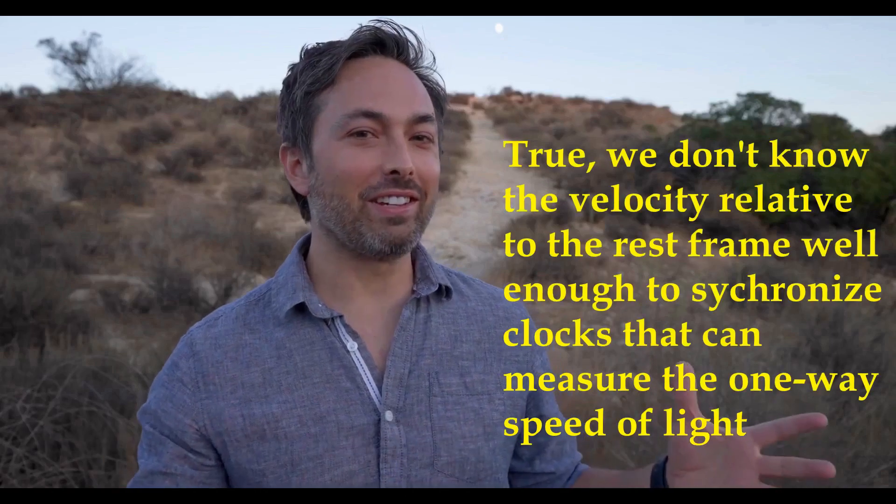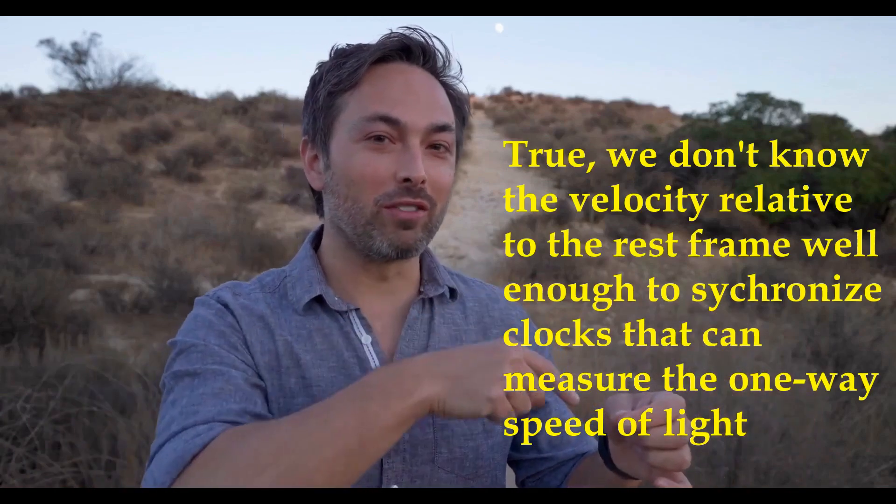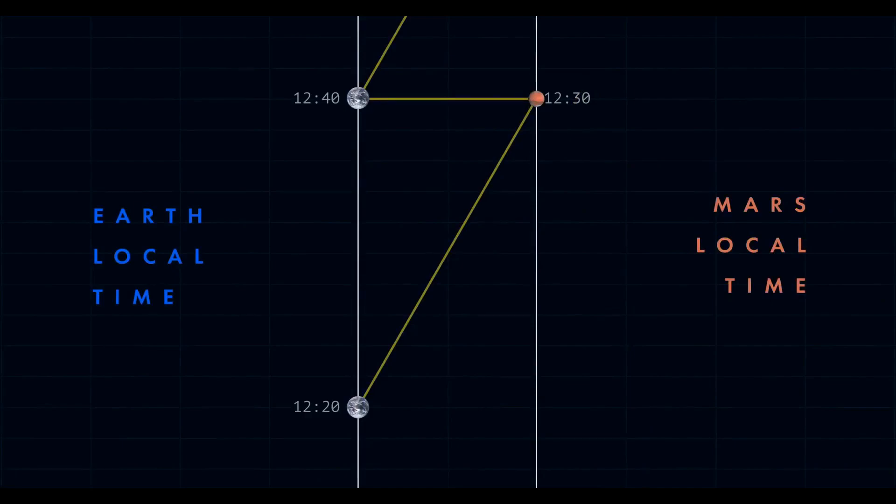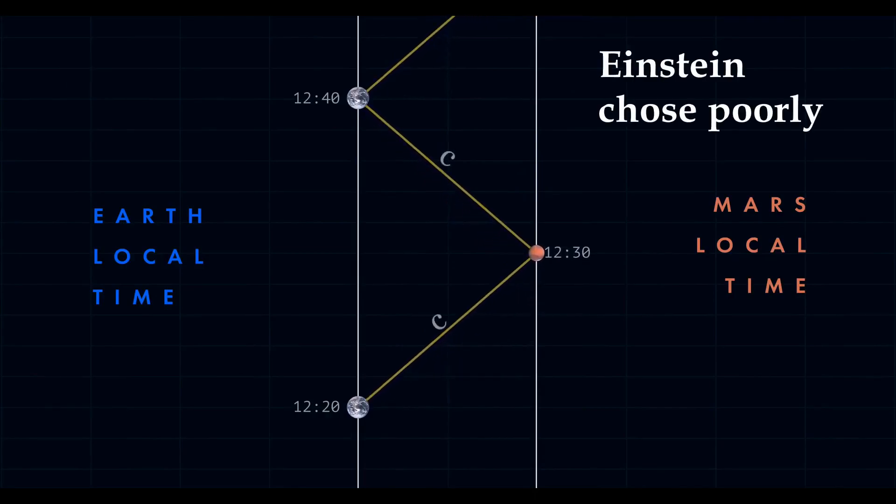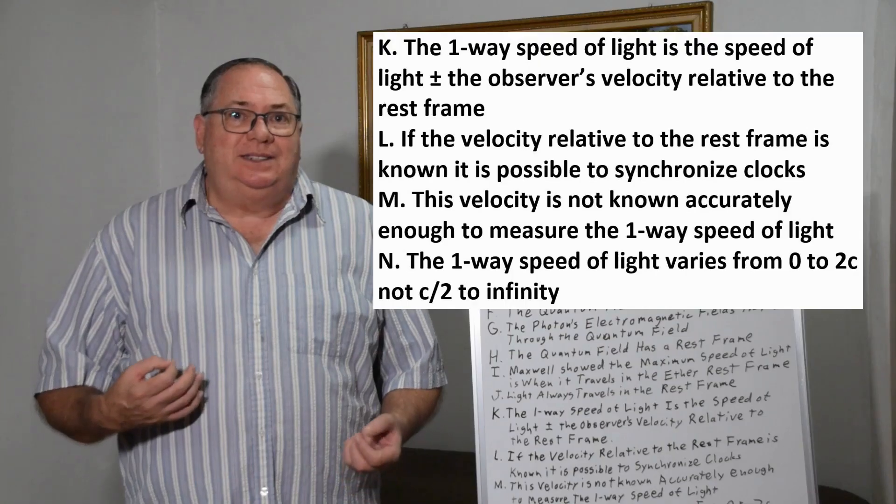The reality is, we're stuck. We need synchronized clocks to measure the one-way speed of light, but we need to know the one-way speed of light in order to synchronize our clocks. Einstein chose the convention where the one-way speed of light is always the same, but from an experimental perspective, any other convention is just as valid, up to and including one where the speed of light is c over 2 one way and instantaneous the other way.